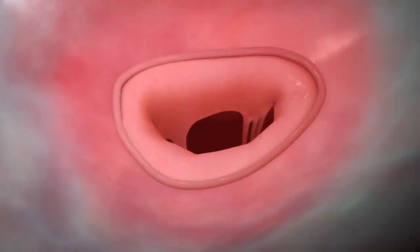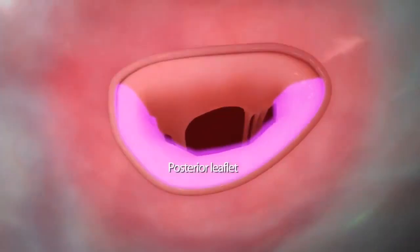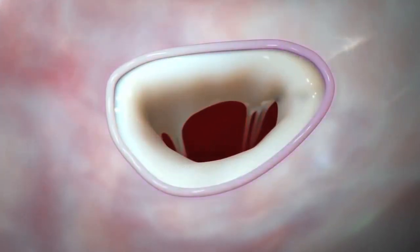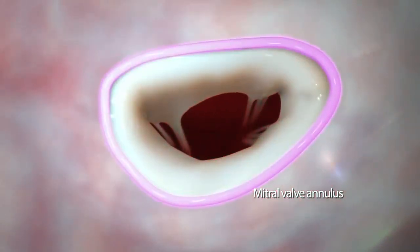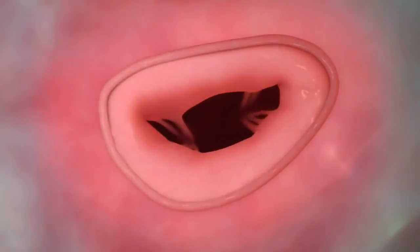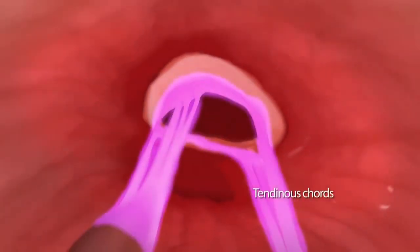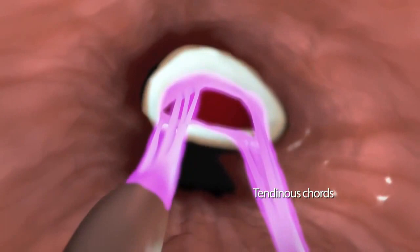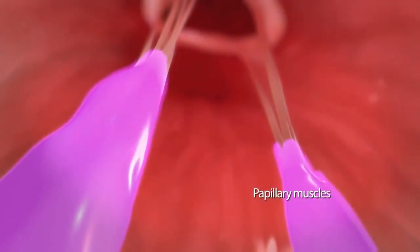The mitral valve has an anterior leaflet and a posterior leaflet and is surrounded by a fibrous ring of tissue, called the annulus, that maintains the shape of the valve, which is important to ensure that the leaflets close completely. Tendinous cords anchor the leaflets to projections inside your left ventricle, called papillary muscles.